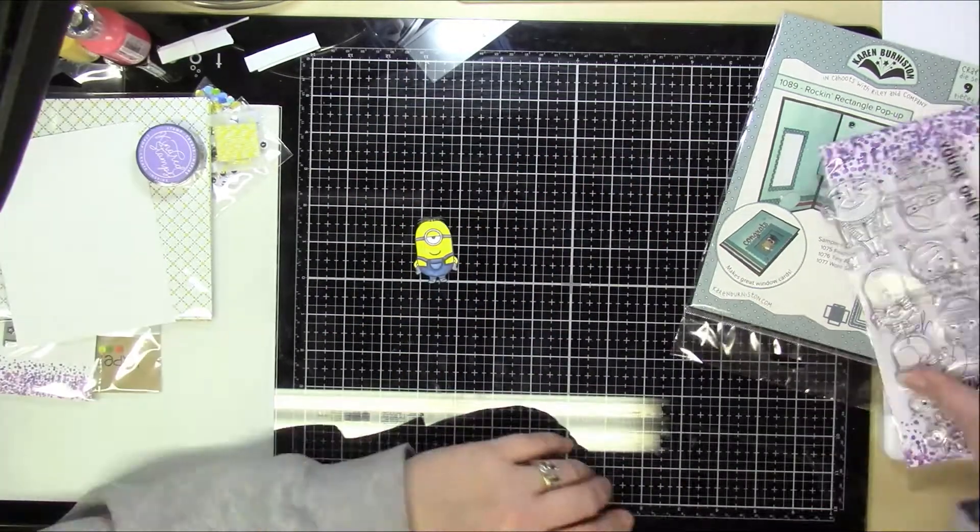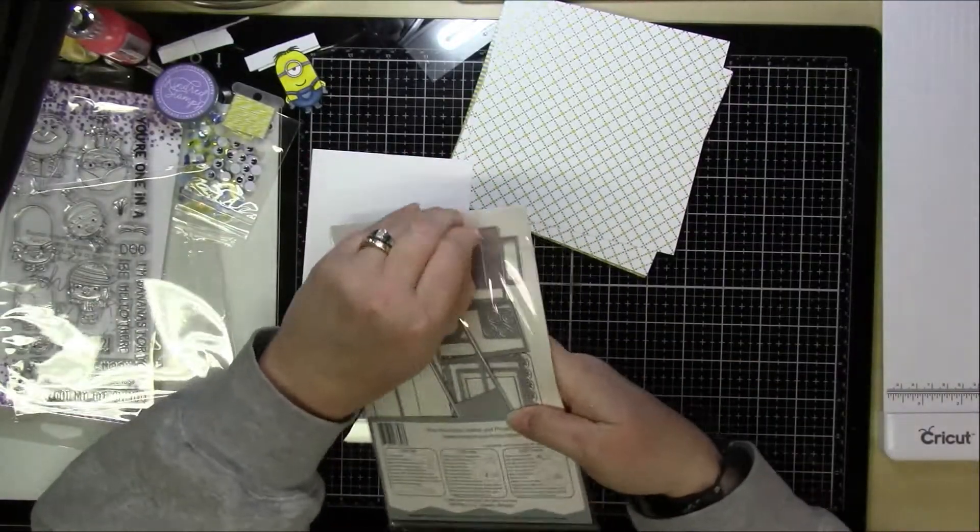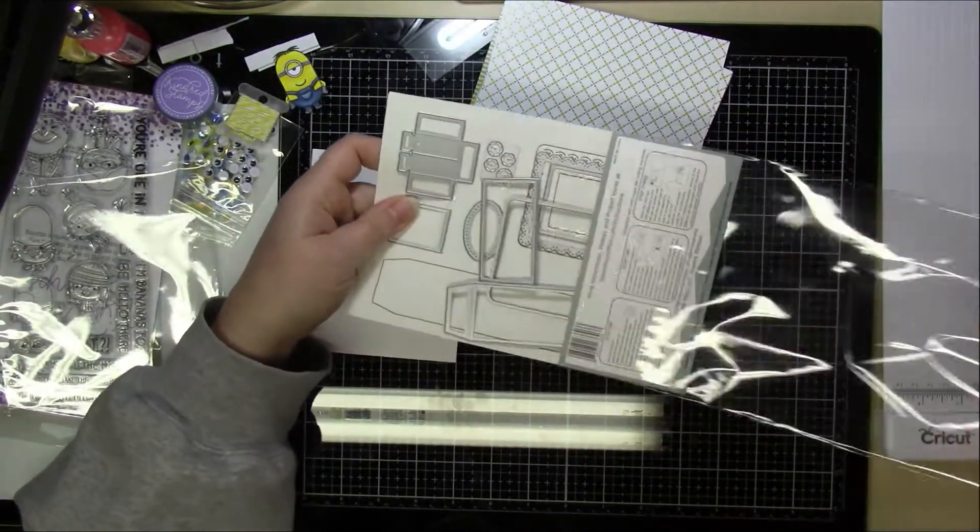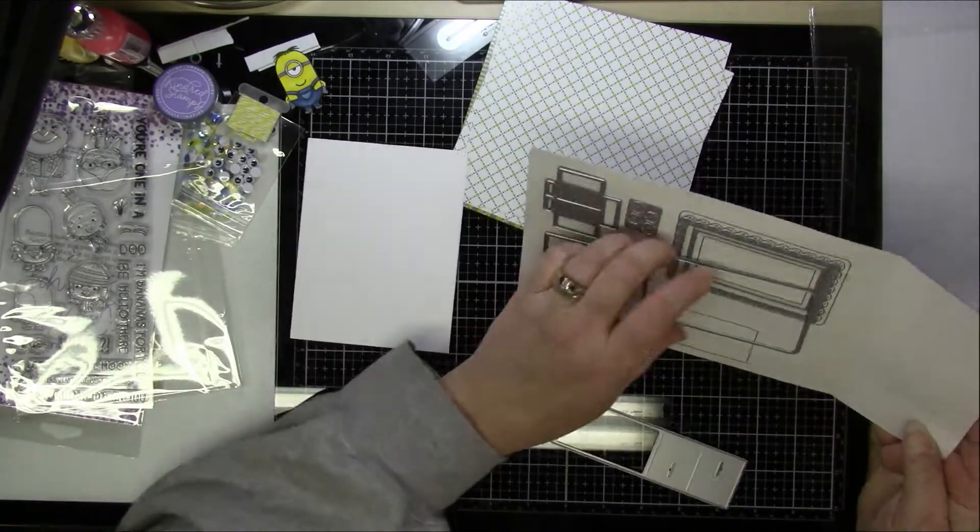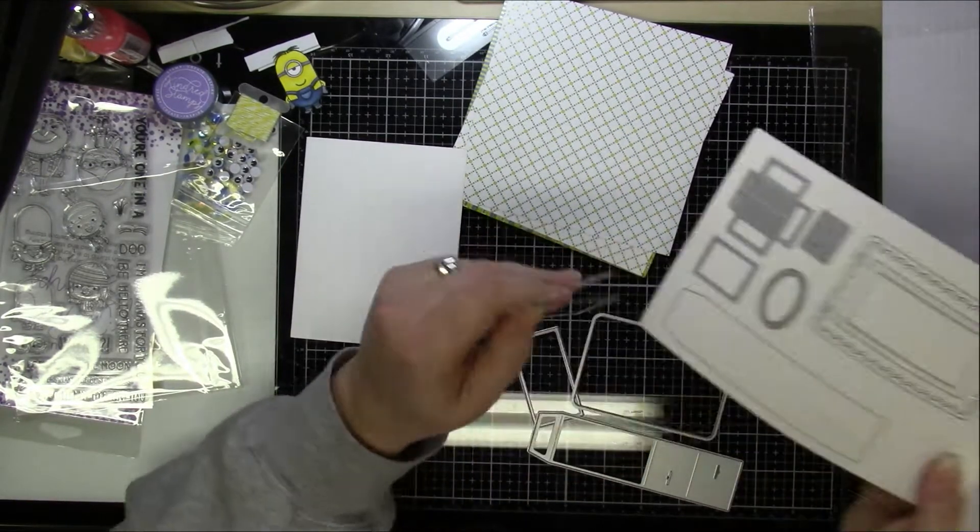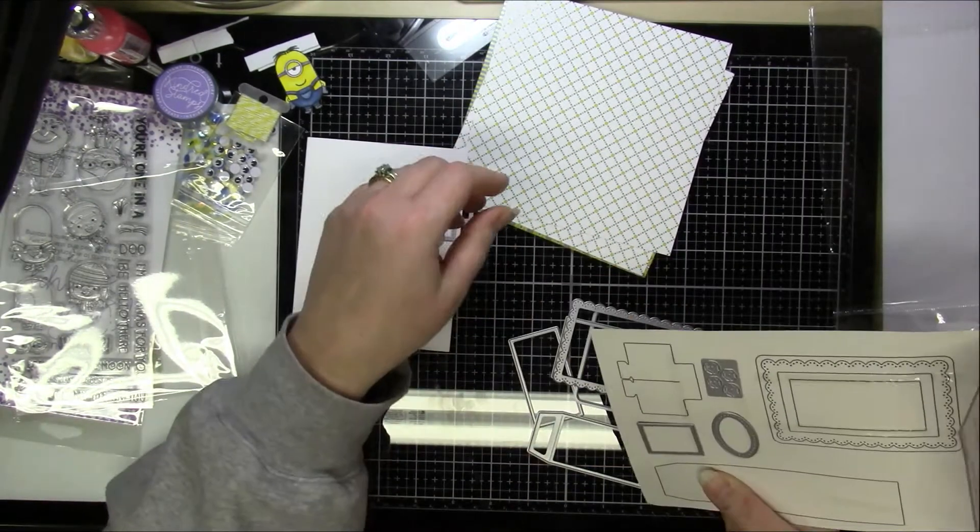So to start with, like I said, I cut out all of the, I die cut out all of the parts for this. Now there's a lot of parts here and some you can use, some you don't. A lot of this has to do with how you want to decorate it.